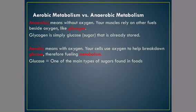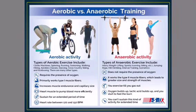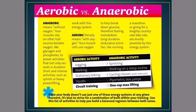Some extra things just to note: aerobic metabolism versus anaerobic metabolism, or simply anaerobic versus aerobic. Aerobic means without oxygen — your muscles rely on fuels besides oxygen, like glycogen, which is simply glucose sugar that is already stored. Aerobic means with oxygen — your cells use oxygen to help break down glucose, therefore fueling metabolism. Glucose equals one of the main types of sugars found in foods. We have a couple of diagrams here showing you the difference between aerobic and anaerobic training. Please remember: aerobic is exercising with oxygen flowing throughout the body; anaerobic is without oxygen flowing throughout the body.